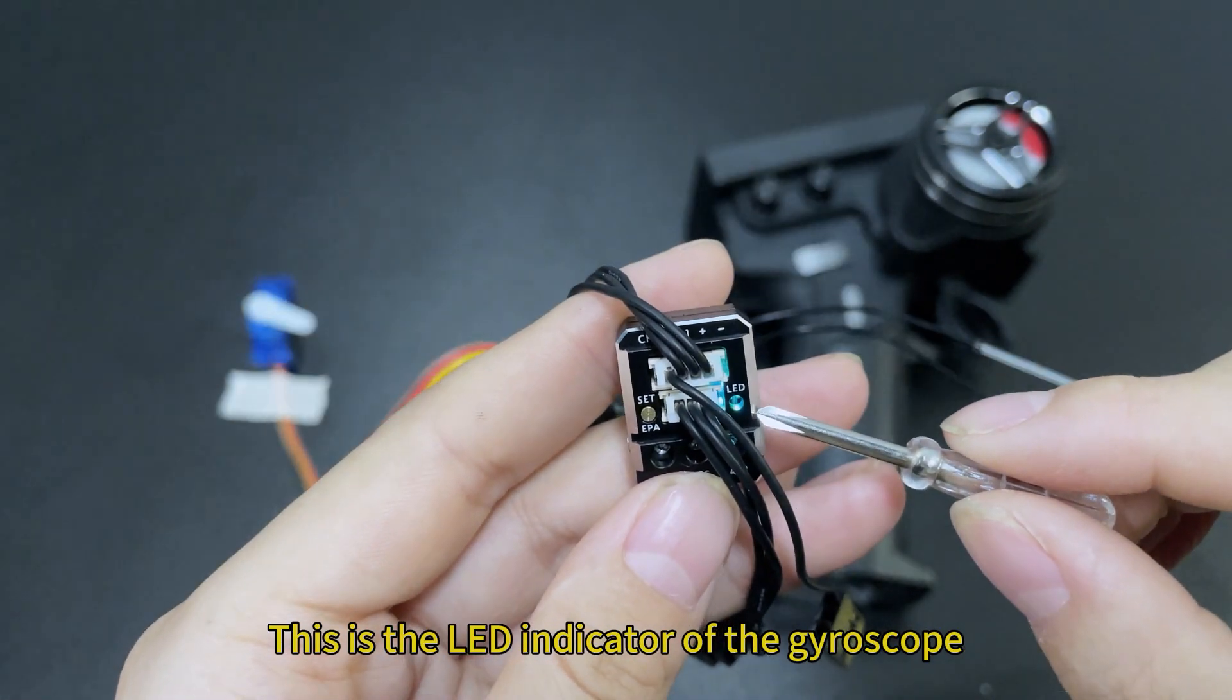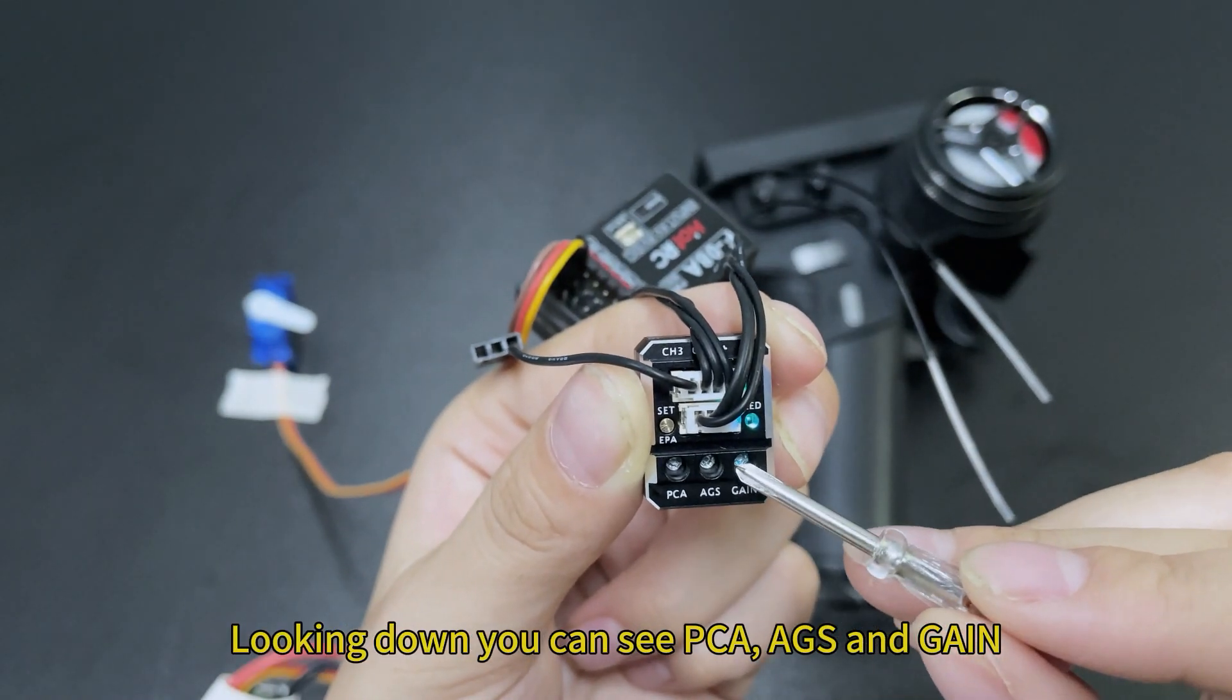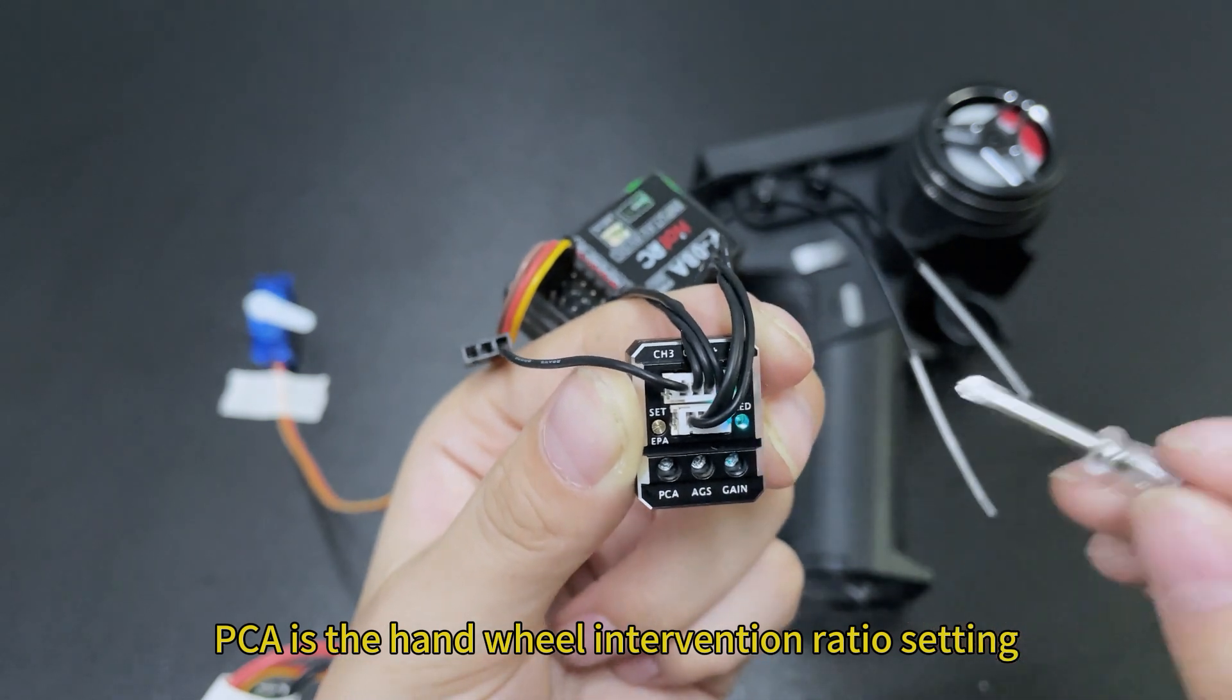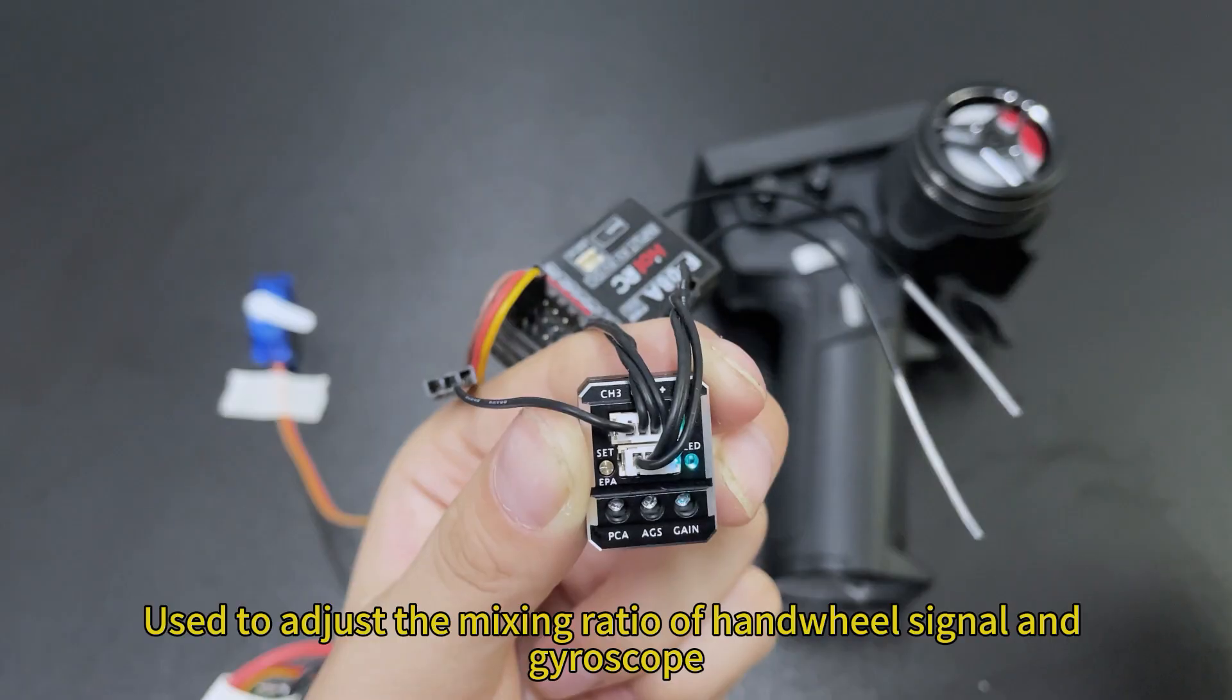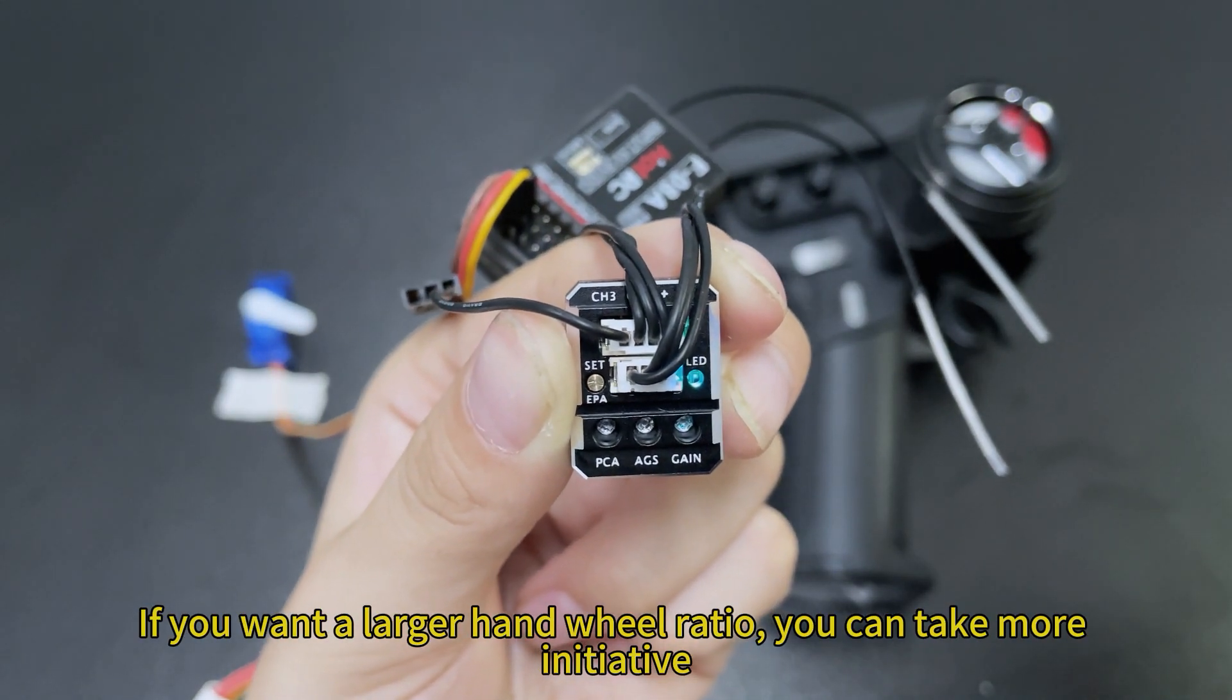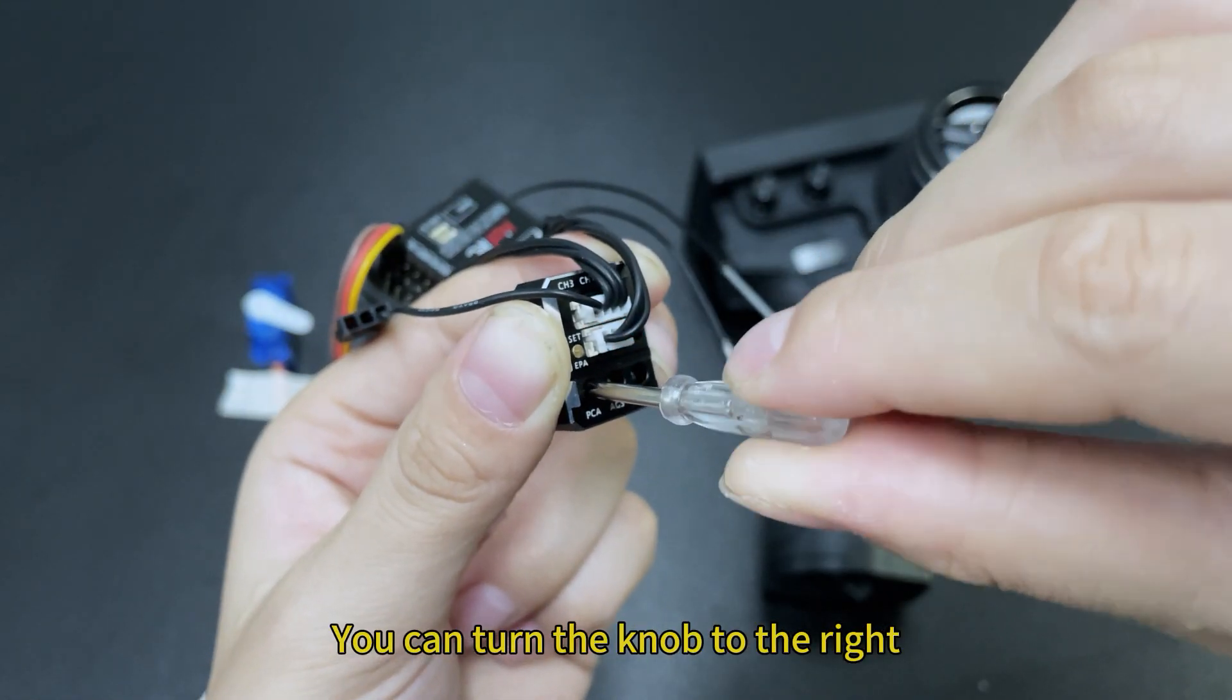This is the LED indicator of the gyroscope. Looking down you can see PCA, AGS and GIM. PCA is the hand wheel intervention ratio setting. Used to adjust the mixing ratio of hand wheel signal and gyroscope. If you want a larger hand wheel ratio, you can take more initiative. You can turn the knob to the right.